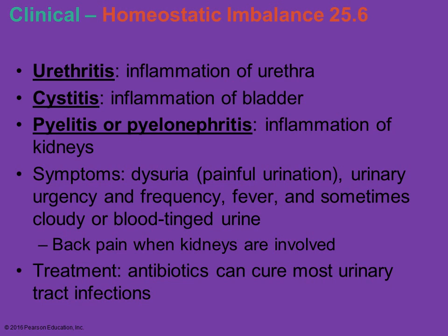Inflammation of the urethra is urethritis. Cystitis is inflammation of the bladder. Pyelitis is inflammation of the kidney. We distinguish where the urinary tract infection is by these specific terms, though the general term would just be UTI. Symptoms usually include painful urination, increased frequency with perhaps less urine released each time, fever, sometimes blood in the urine, and cloudy urine. If the kidneys are involved, there's usually pain in the lower back. Antibiotics are very successful for treating most urinary tract infections because they are usually caused by bacteria.